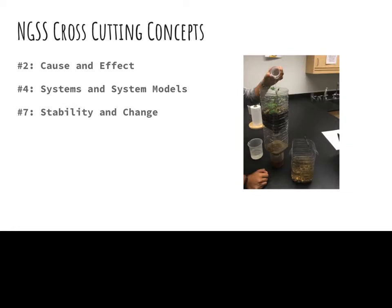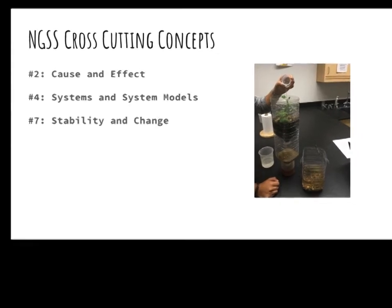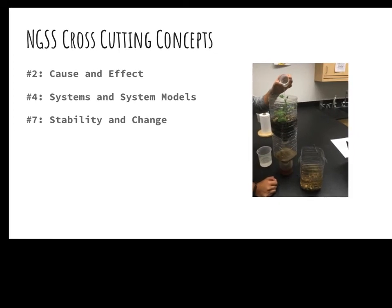These are the specific cross-cutting concepts that we hit pretty regularly in eco-columns: cause and effect, systems and system models, and stability and change. I actually do have a document that goes over all of the NGSS cross-cutting concepts, science and engineering practices, and Common Core State Standards, and how eco-columns fits into the ones on this presentation.